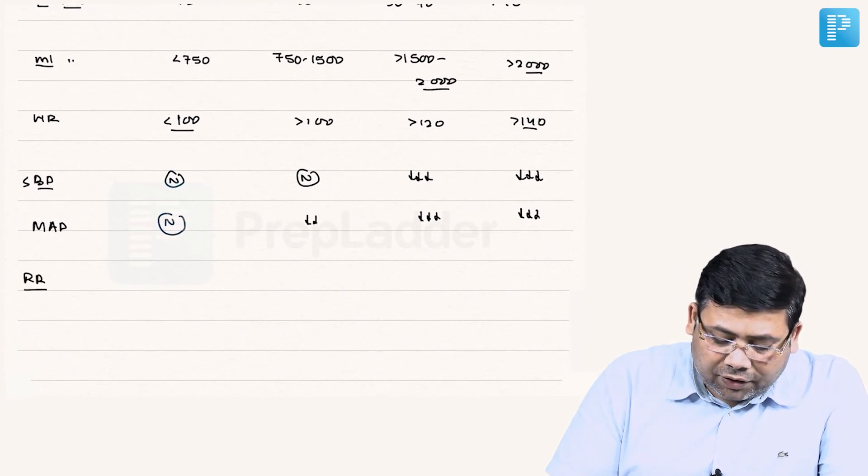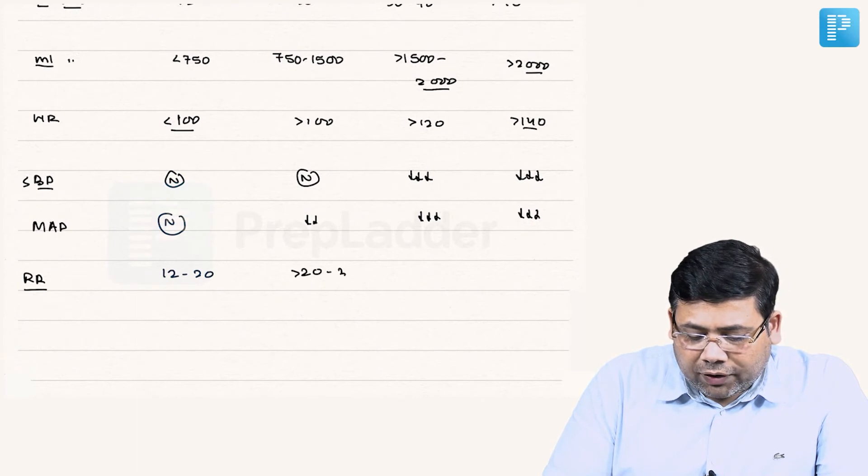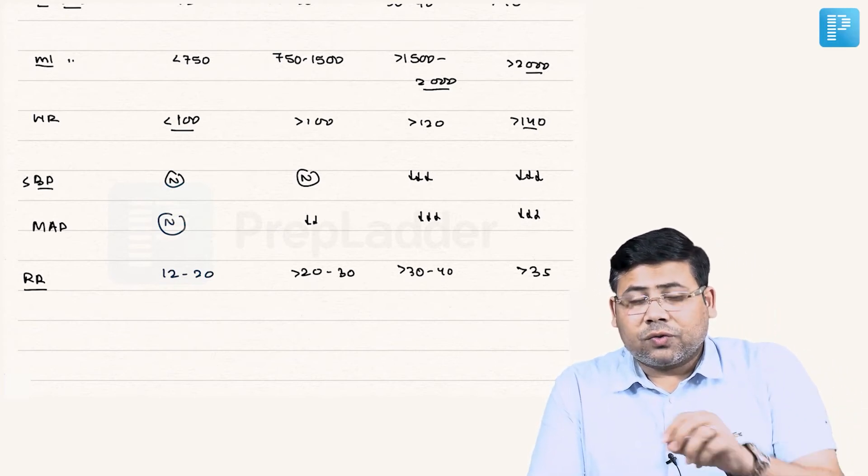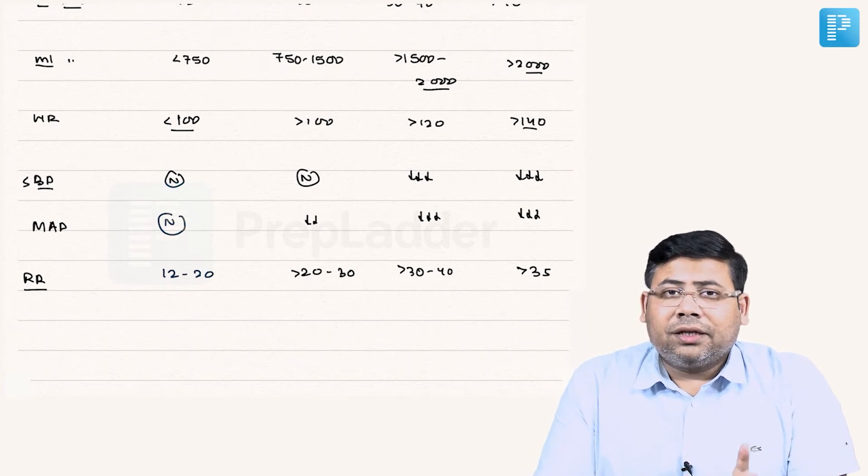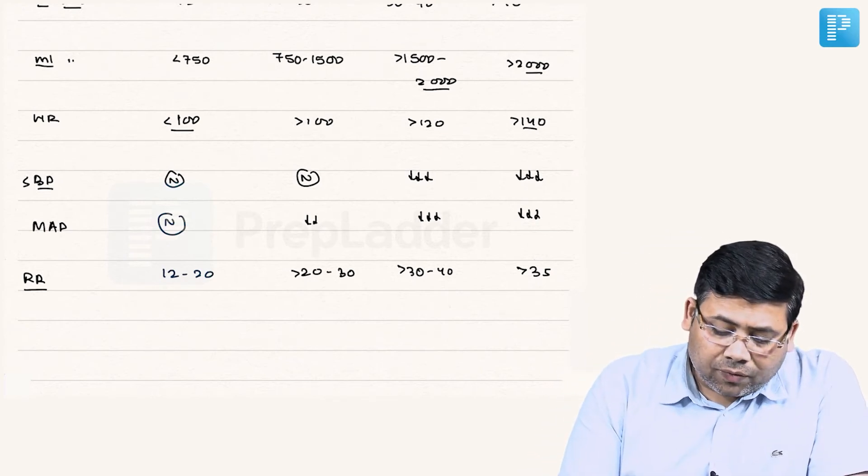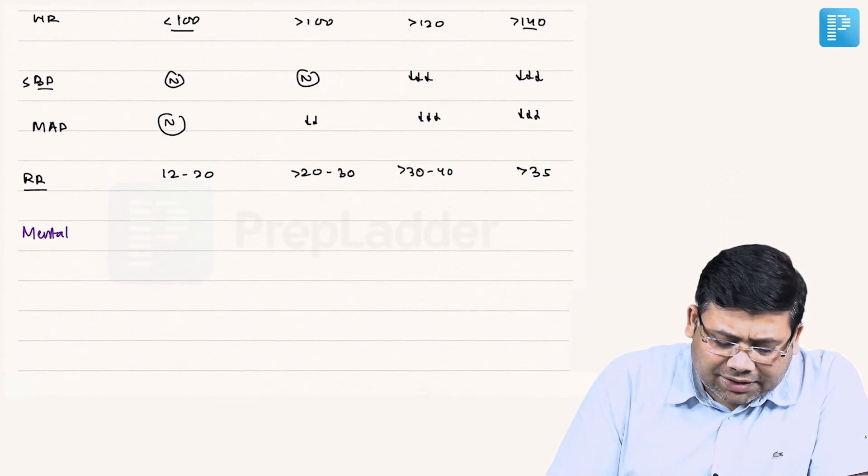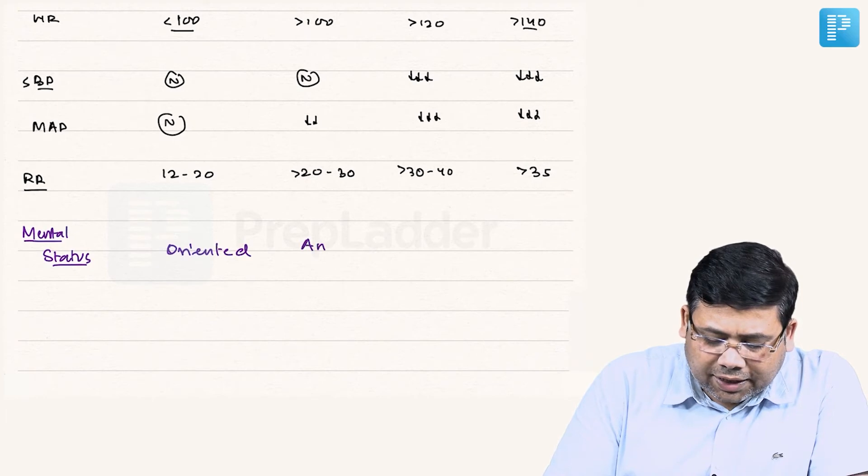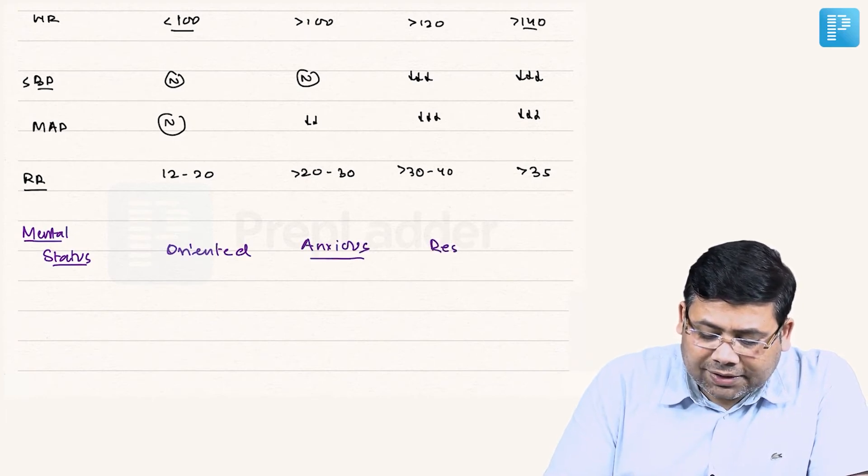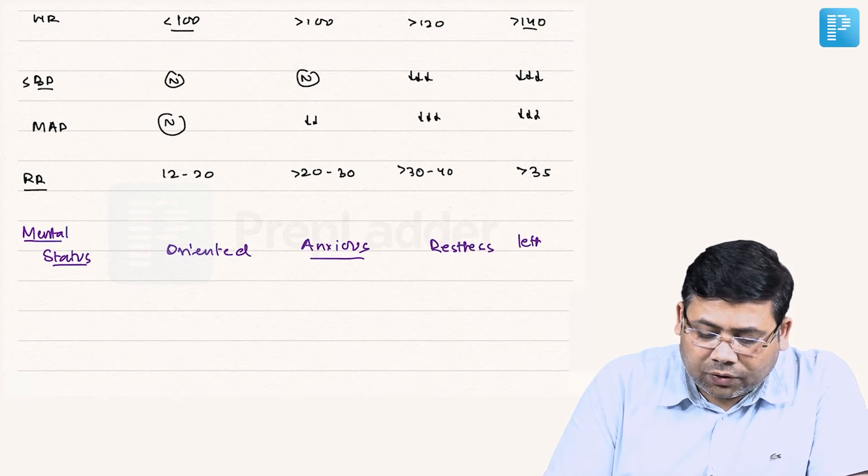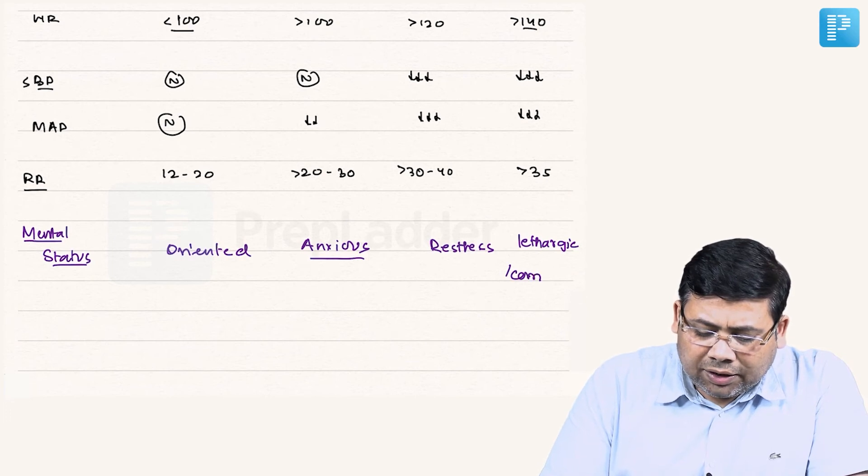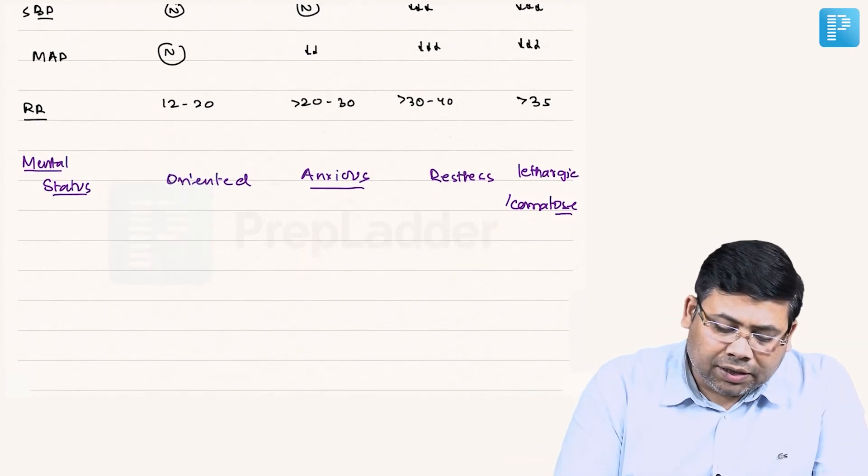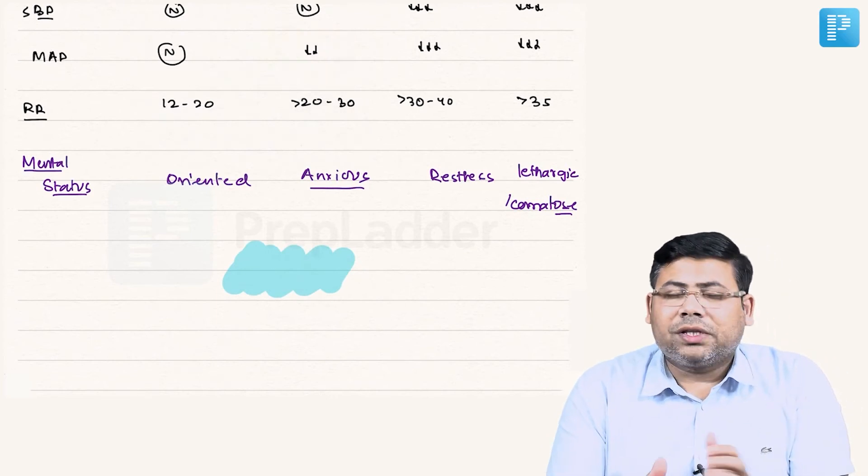Respiratory rate of the patient: 12 to 20, then 20 to 30, 30 to 40, and persistently elevated breath count above 35 is significant. The breath count was 35 but other factors were matching grade 3 hypovolemic shock. We see the mental status: oriented, anxious, anxious, then restless, then lethargic or comatose. There are some features going in favor of grade 4, some in favor of 3. The body will always start with its compensatory action.